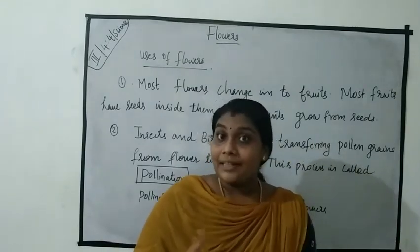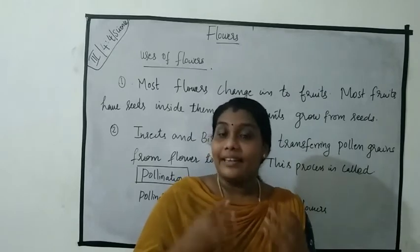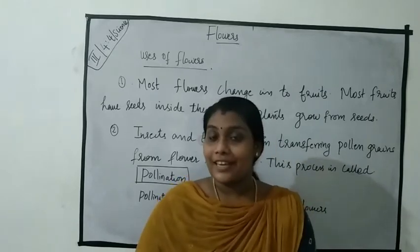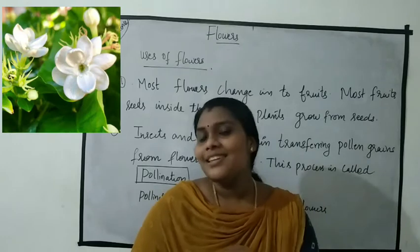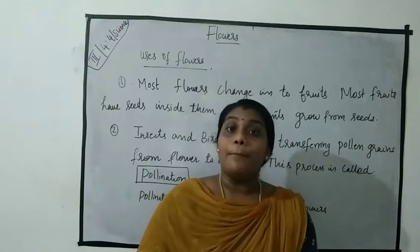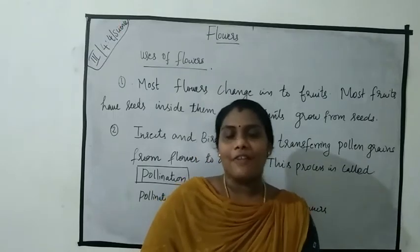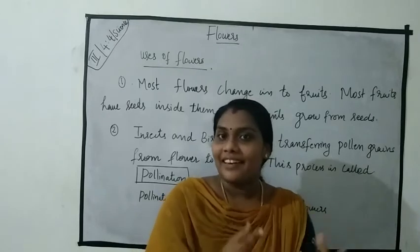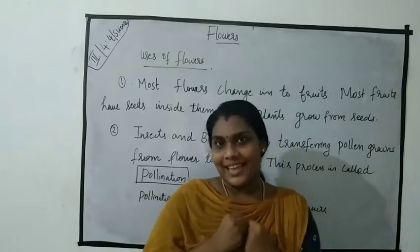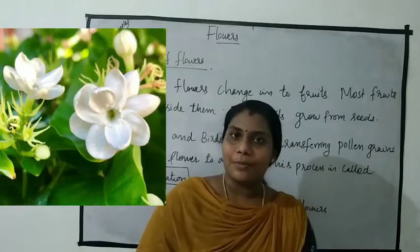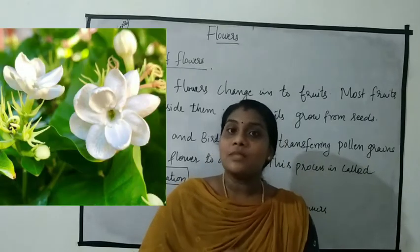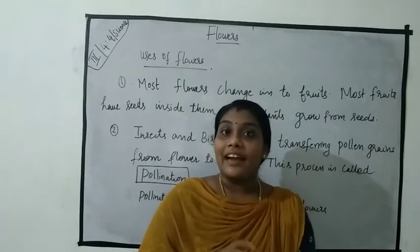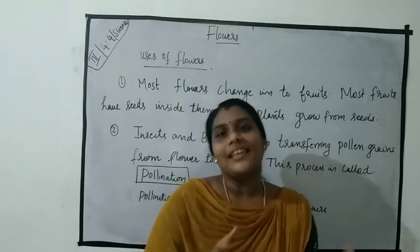But flowers blooming at night are usually white in color. For example, jasmine. Most flowers have a sweet scent that attracts insects. For example, jasmine — jasmines have a sweet scent that attracts insects.